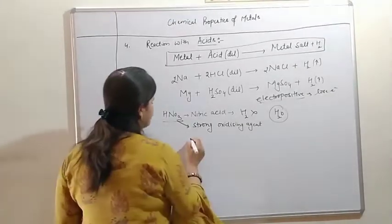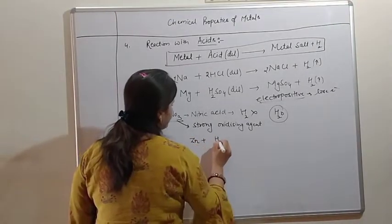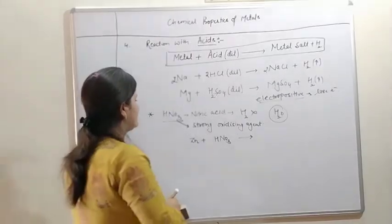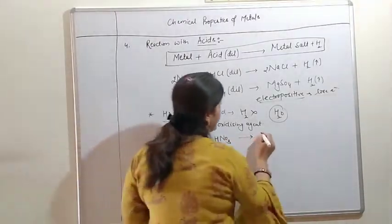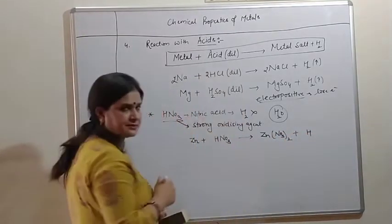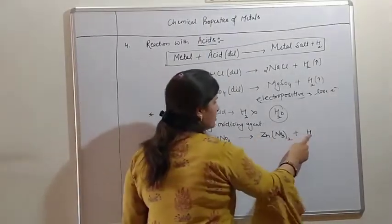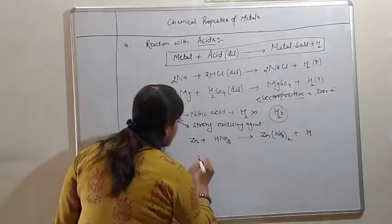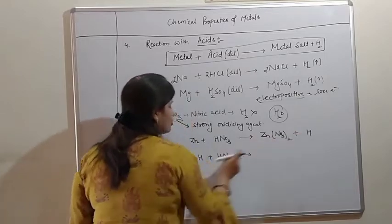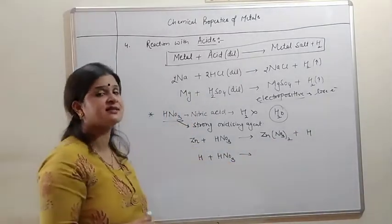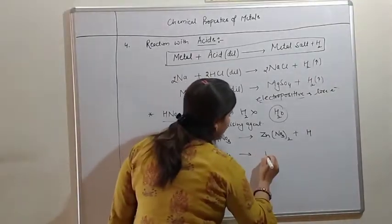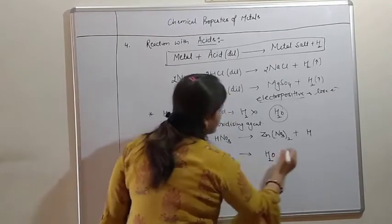Let us understand with an example. If we react zinc with nitric acid HNO3, generally what happens? Zinc displaces hydrogen, and nitric acid releases hydrogen atoms. But if zinc displaces hydrogen, immediately the nitric acid will oxidize this hydrogen into water and the nitric acid itself will get reduced.